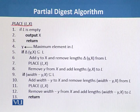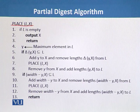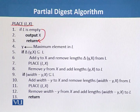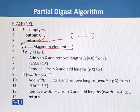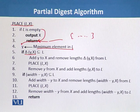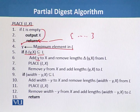Now we look at the Place(L, x) function. If L is empty, then we directly get the answer. If L is not empty, we take the maximum value of L and call it y. We then calculate delta(y, x), the distance of y from each element of x. If that calculated value is a subset of L, then we add y to x.